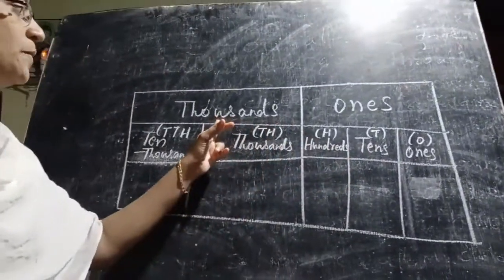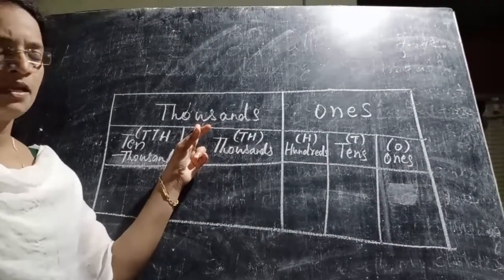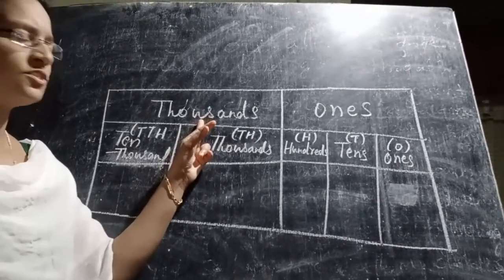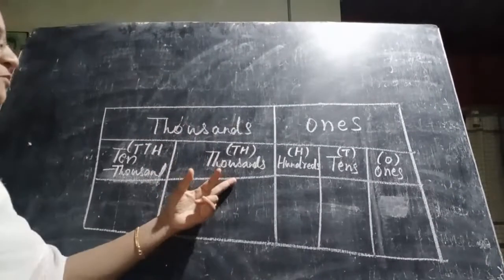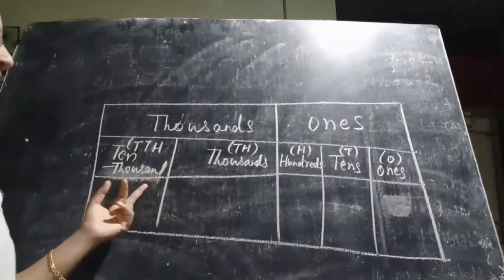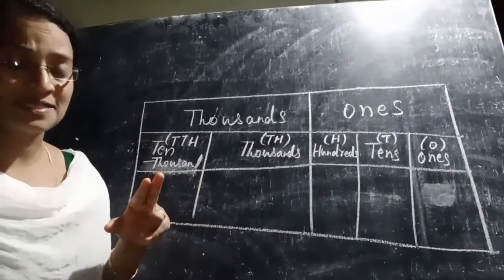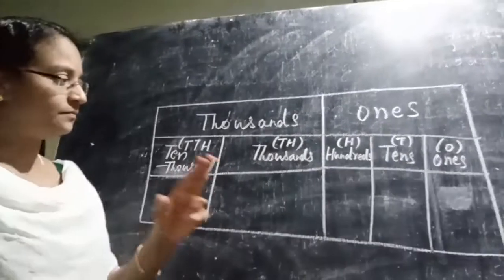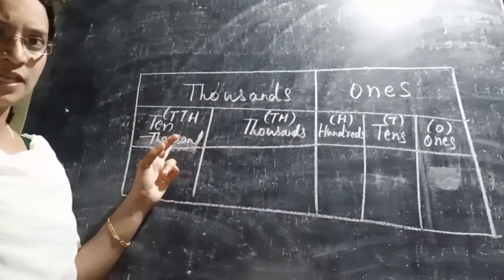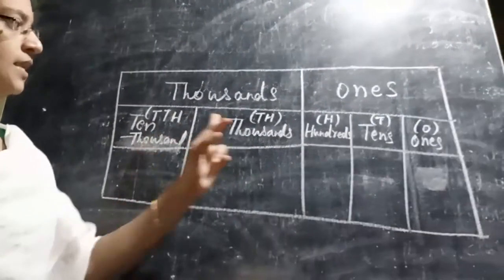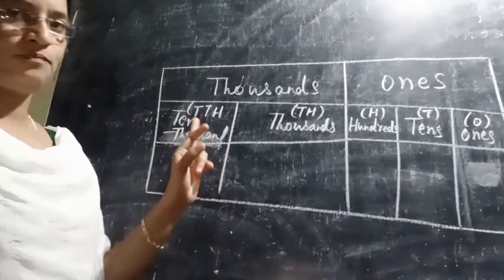The next period is called the thousands period. The thousands period has two places: thousands and ten-thousands.